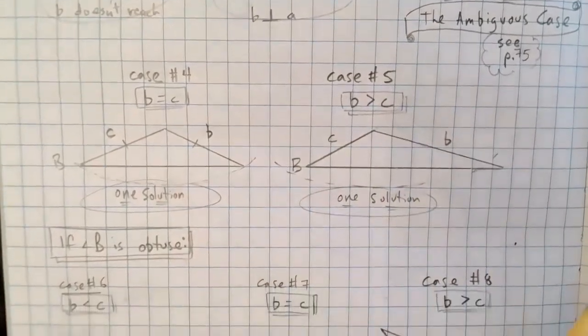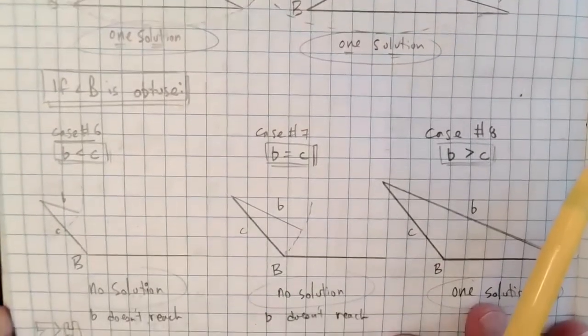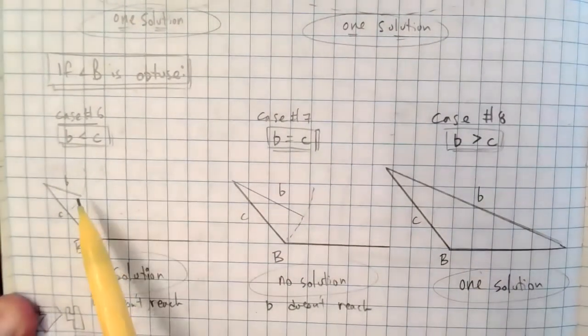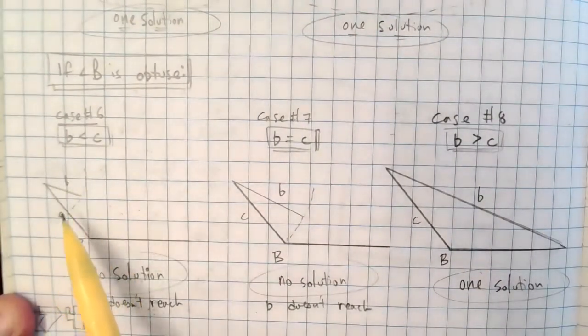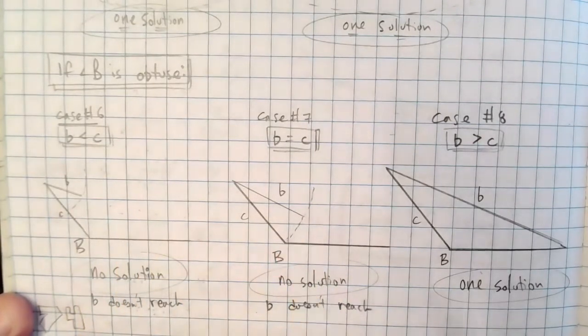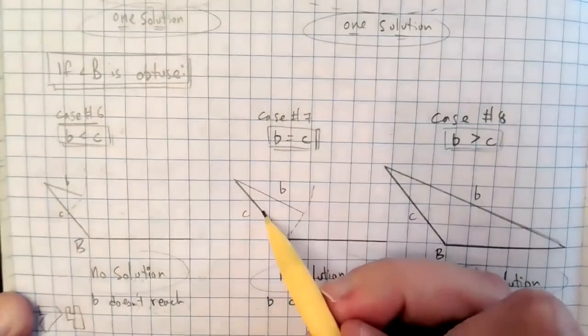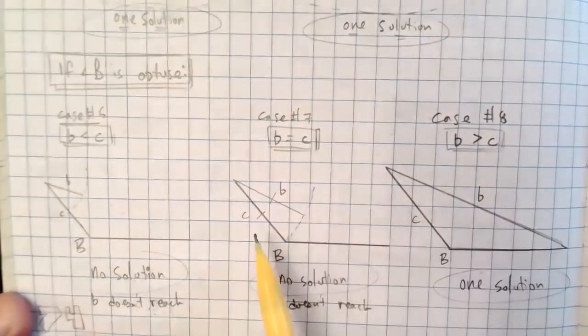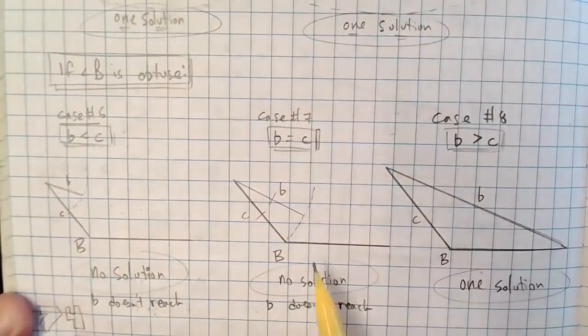If B is obtuse, we're going to start with this scenario. If b is less than c, there's no way. No matter how this b swivels, you're going to get a triangle. So there's no solution. If b is equal to c. Oh, let me write the congruency markers. Then if b is equal to c, there's no solutions. Because that thing can't reach. It will touch right there. But that's not a triangle. That'll just be an angle.